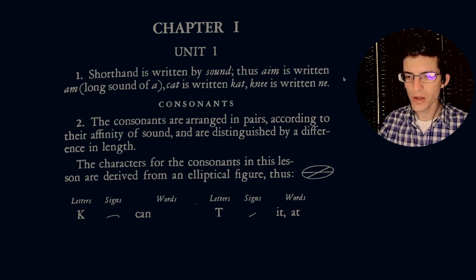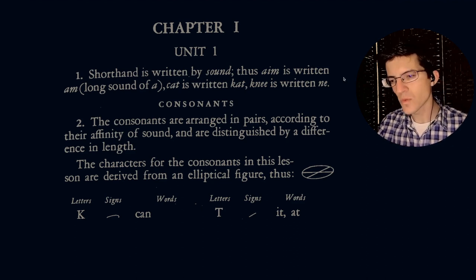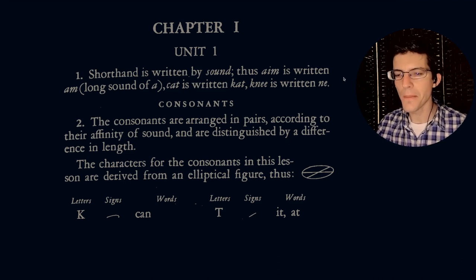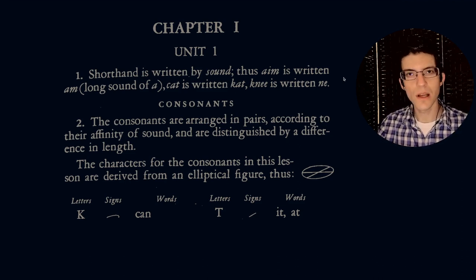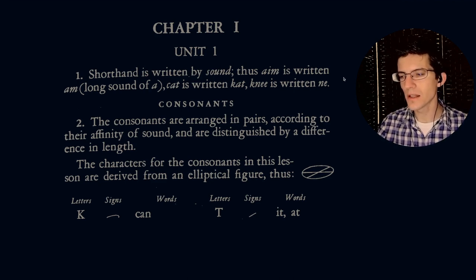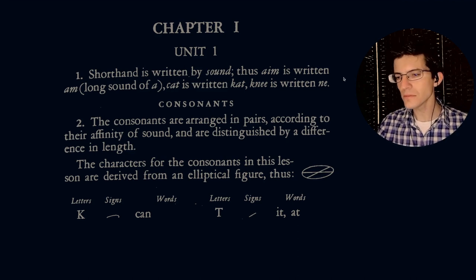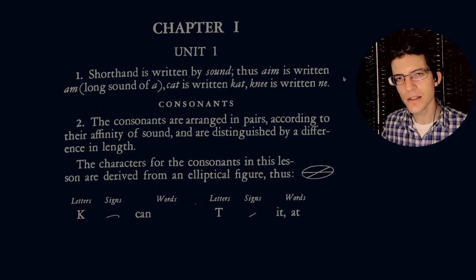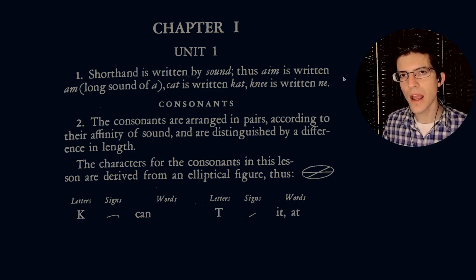Chapter one, unit one. Shorthand is written by sound. Thus, aim is written A-M, cat is written K-A-T, knee is written N-E. The only thing I'm going to mention about this is that they're making a distinction here between orthographic spelling and phonetic spelling. So they're saying that shorthand is written phonetically.